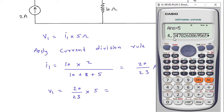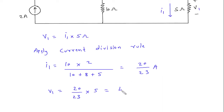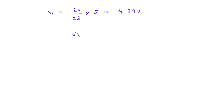Therefore, V1 is equal to (20/23) into 5 Ohm, which gives 4.34 Volts. So the value of V1 is 4.34 Volts.